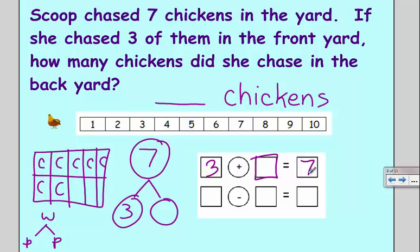In a subtraction sentence, I want to start with the whole. I have seven altogether. I know that if I take three away, that'll also leave me with my missing addend. So, your missing addend problems are really just subtraction problems.